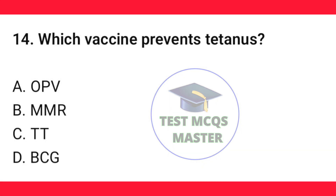Question number 14. Which vaccine prevents tetanus? The correct option is C — TT (tetanus toxoid).